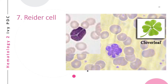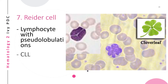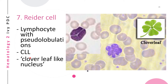A radar cell is a cell seen in quantitative malignant lymphoproliferative disease — specifically CLL, or chronic lymphocytic leukemia. Radar cells are lymphocytes with pseudolobulations. Normally, lymphocytes have one nucleus with no lobulations, but if the nucleus has lobulations resembling a clover leaf, it is considered a radar cell.